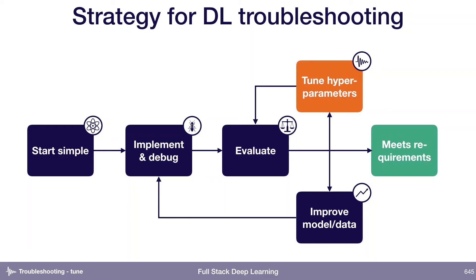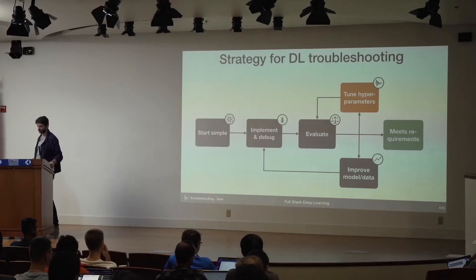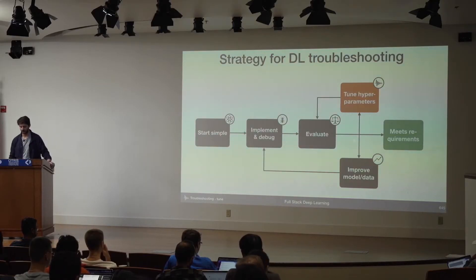The last step in this flow is: you've gotten to the point where your training and your validation error are reasonably close to what you want them to be. And so then the last thing to do is to tune hyperparameters.